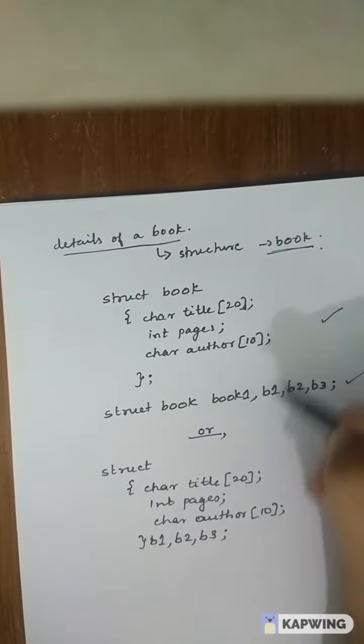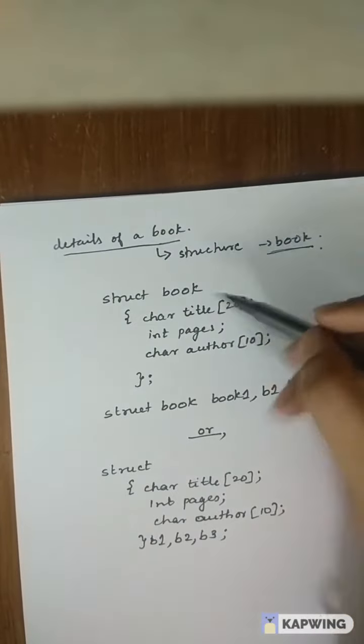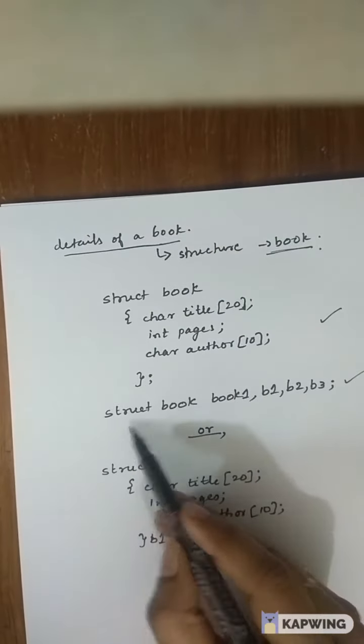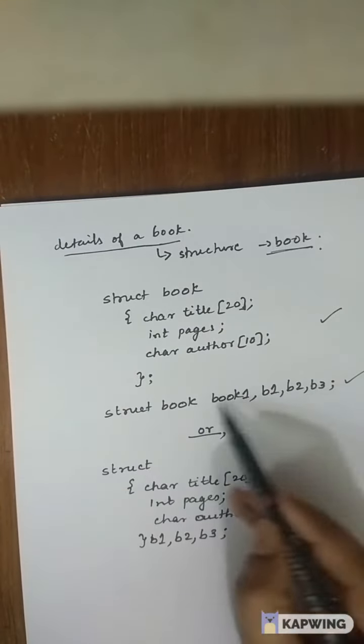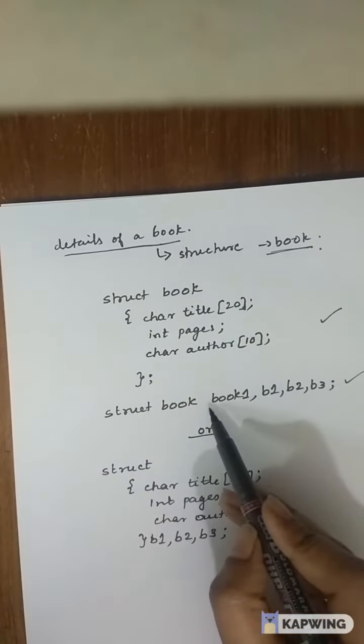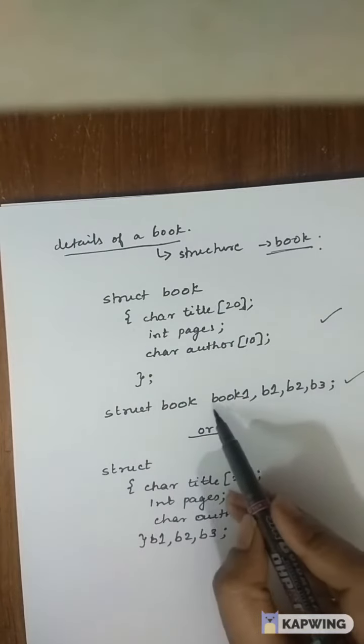Now I want to declare the variables of structure book. So what should I do? I should write struct book. And now I am declaring the variables. Suppose first variable name I need is book 1.